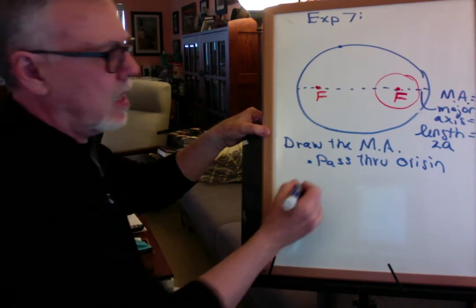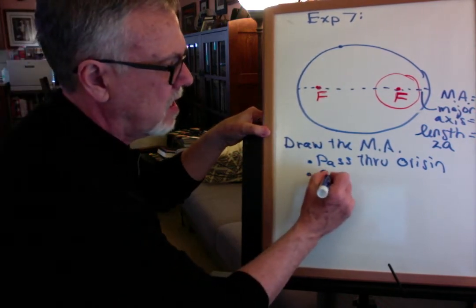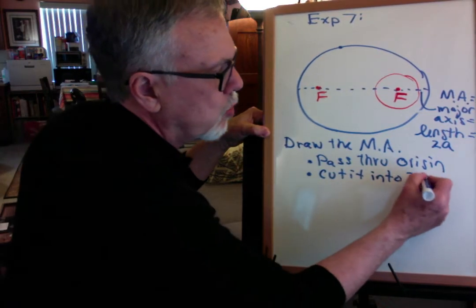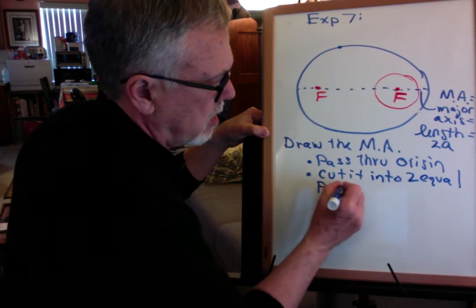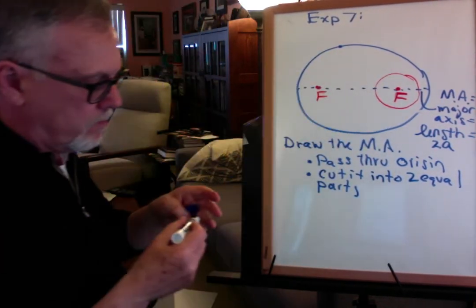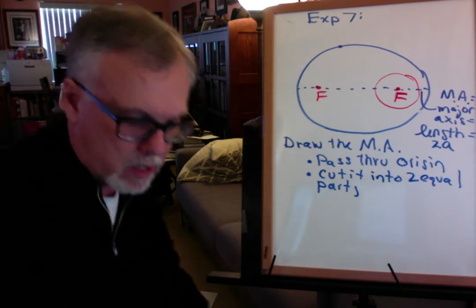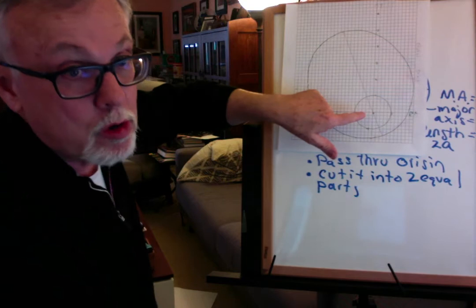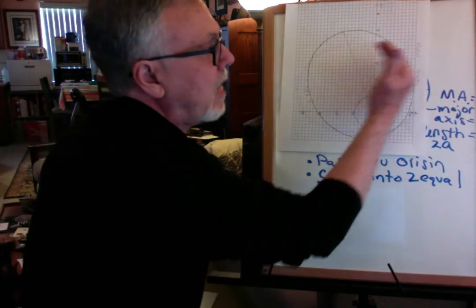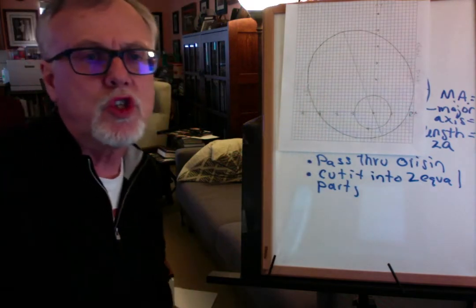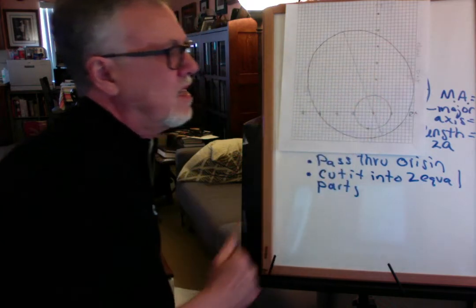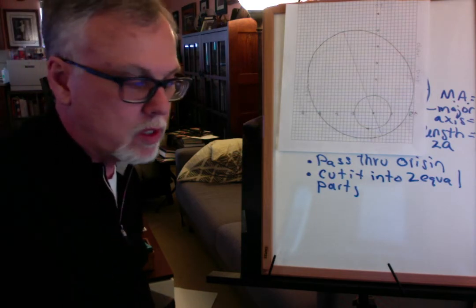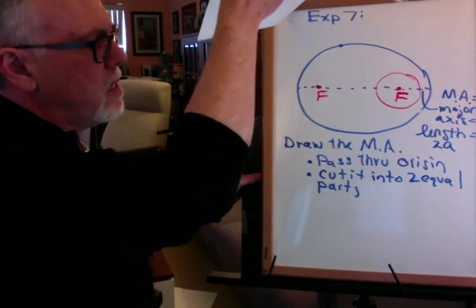To draw the major axis, it has to pass through the origin — that's where one of the foci is, the center of the moon. It should also cut the ellipse into two equal parts, meaning this half should look like that half. Here I'm doing it pretty poorly — you can see this half is smaller than that half, so I didn't do a very good job. You have to eyeball that pretty carefully. I'll show you a little trick that helped me when I actually drew it reasonably well.